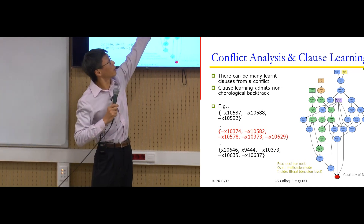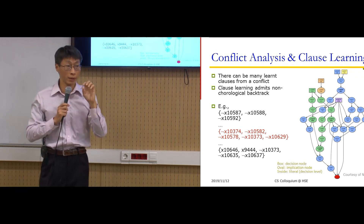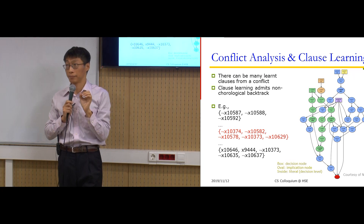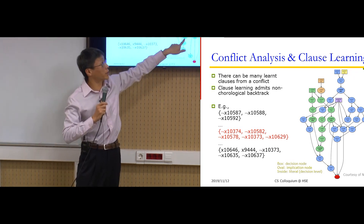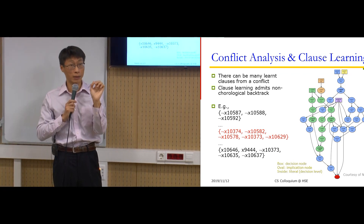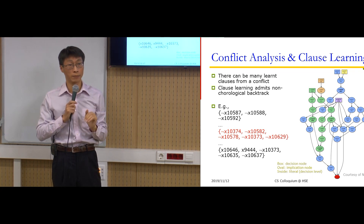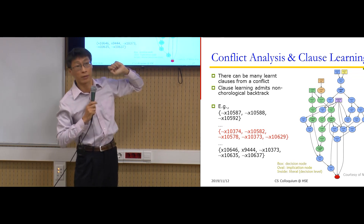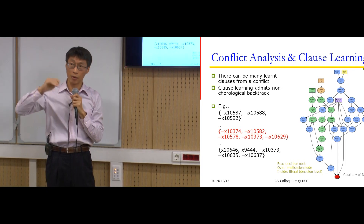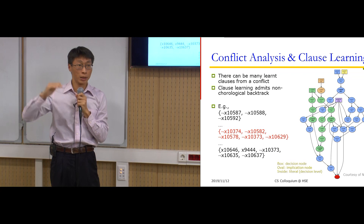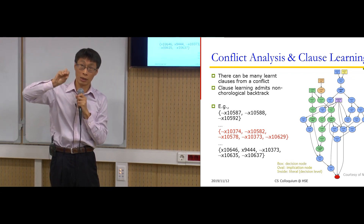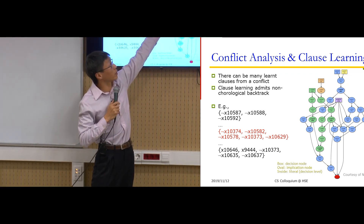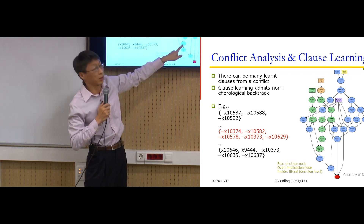Here is a more complicated instance — a snapshot of the implication graph during SAT solving. Square nodes represent decisions, and oval nodes represent implied assignments. The colors show implications under a particular decision level — levels 16, 23, 18, 26, 25, and so on. During SAT solving, we maintain a queue of current variable assignments, numbered starting from level 0, level 1, and so on.